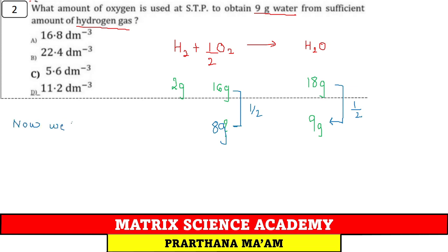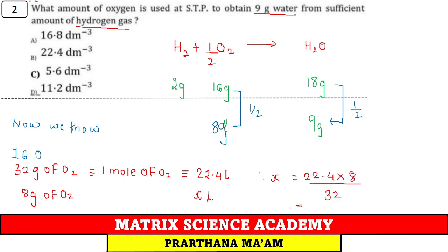First find mass - 18 gram requires 16 gram oxygen, so 9 gram requires half of 16, which is 8 gram oxygen. But option shows volume in dm cube. Now, we know 16 gram of oxygen can be written as 32 gram of O2, which is 1 mole of O2, corresponds to 22.4 litre. But we need 8 gram O2 equals x litre. Cross multiply - x equals 22.4 into 8 divided by 32, which gives 5.6 litre or 5.6 dm cube. Answer is option C.